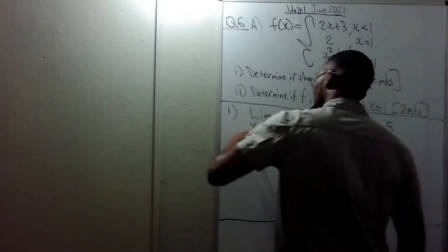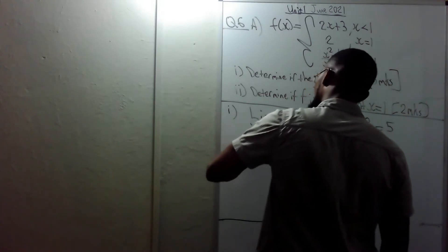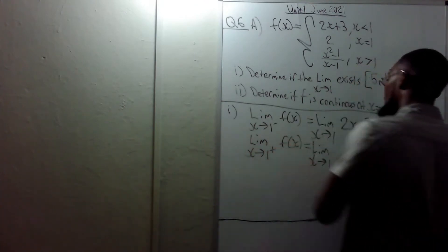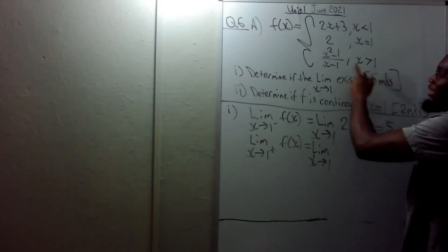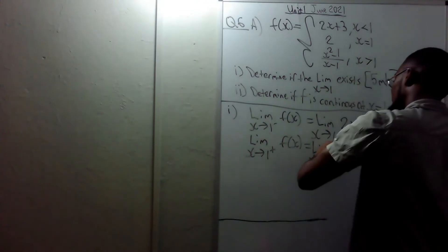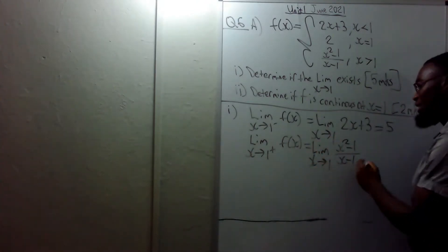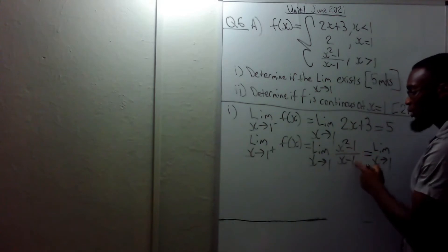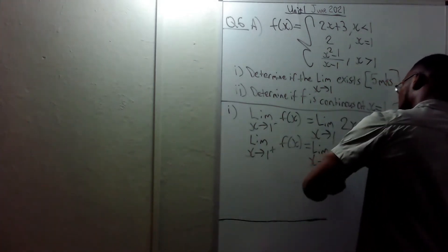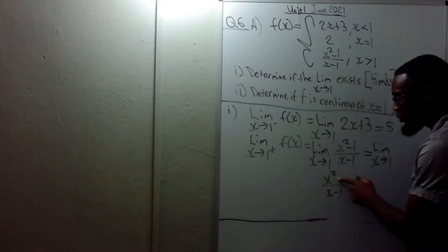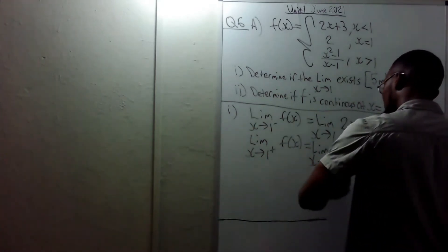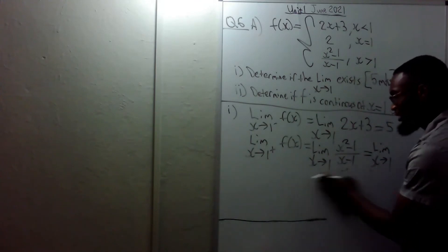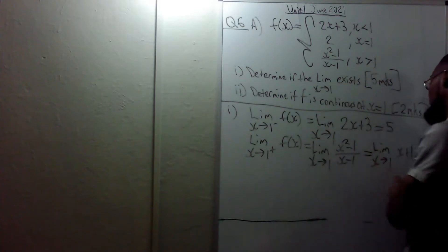Now the limit as x approaches one from the right of f(x) — the function from the right is when x is greater than one, that is x² minus one over x minus one. Now x² minus one is a difference of two squares: (x − 1)(x + 1) over (x − 1), so this simplifies to the limit of x + 1.